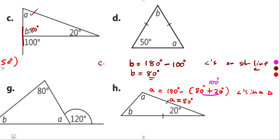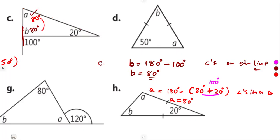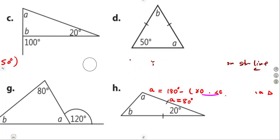Angle A is 80 degrees, which makes this an isosceles triangle — the two angles are equal. There are so many ways of answering these questions.